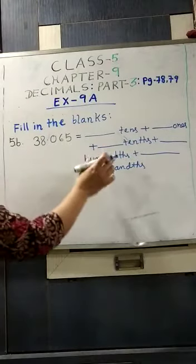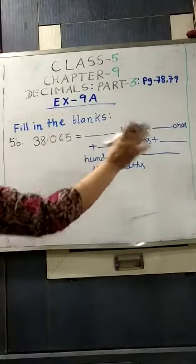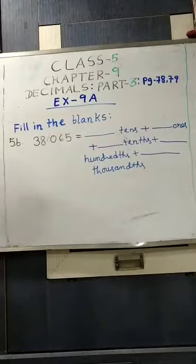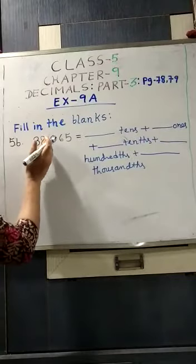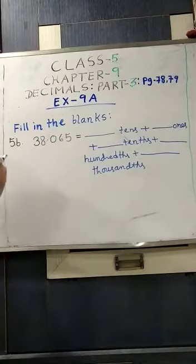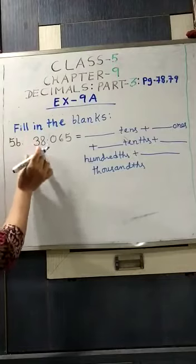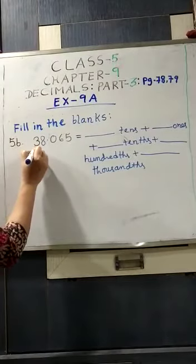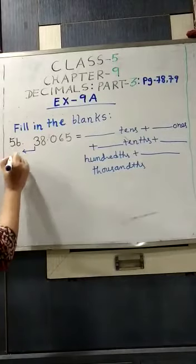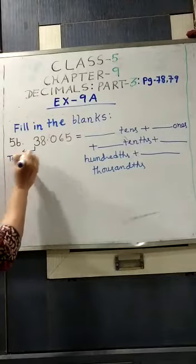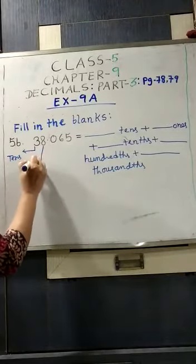So now, how we will put the digits over there? Here, I can make you remember that before the decimal point, here it is written 38. What is the place value of 3? Tens. And 8 is ones.